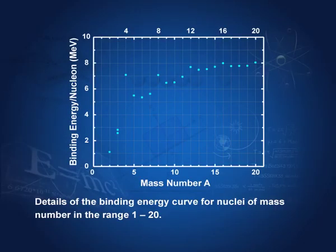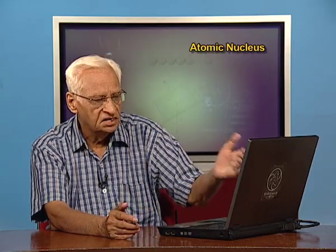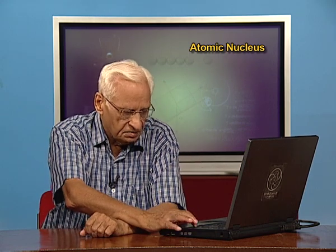In the detailed graph for low mass numbers up to about 20, you can see that mass numbers 4, 8, 12, 16, and 20 show peaks in binding energy per nucleon. This means that mass numbers divisible by 4 are more stable than those not divisible by 4.